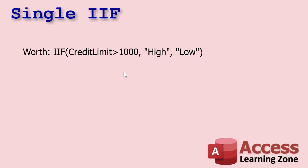Normally in a query, this is how you'd set up a single IF function. Let's say you just want to know if it's over a thousand or not — high and low, two conditions. So we'll create a calculated field called "worth" and say if credit limit is greater than a thousand, then put the word "high" there. Otherwise, put the word "low" there. That's two conditions.